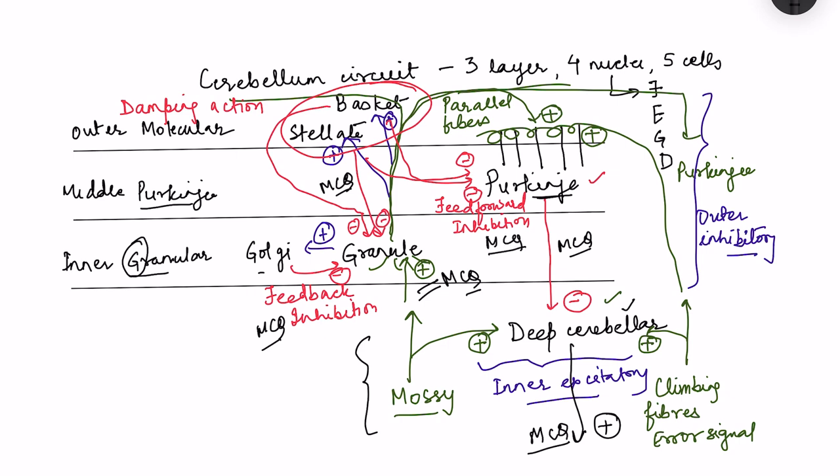Another important MCQ: parallel fibers are formed by the axons of granule cells. That covers all the key points for the cerebellar circuit.